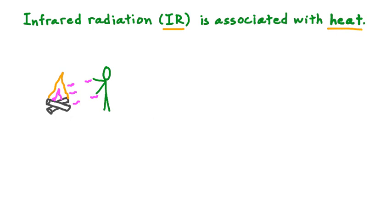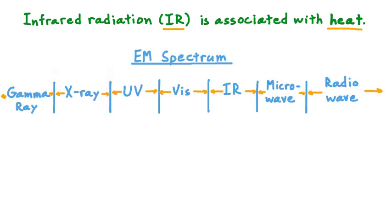Nonetheless, they are connected. Both are examples of electromagnetic radiation. If we take a look at the electromagnetic spectrum, sometimes called the EM spectrum for short, we see at the middle of the spectrum visible light — that's the light that our eyes are sensitive to — and then just to the right of that, infrared radiation. Continuing to the right, there are microwaves, and then at even longer wavelengths, radio waves. And if we go back to visible light and move left instead of right, we reach ultraviolet radiation, called UV for short, then X-rays, and finally gamma rays.